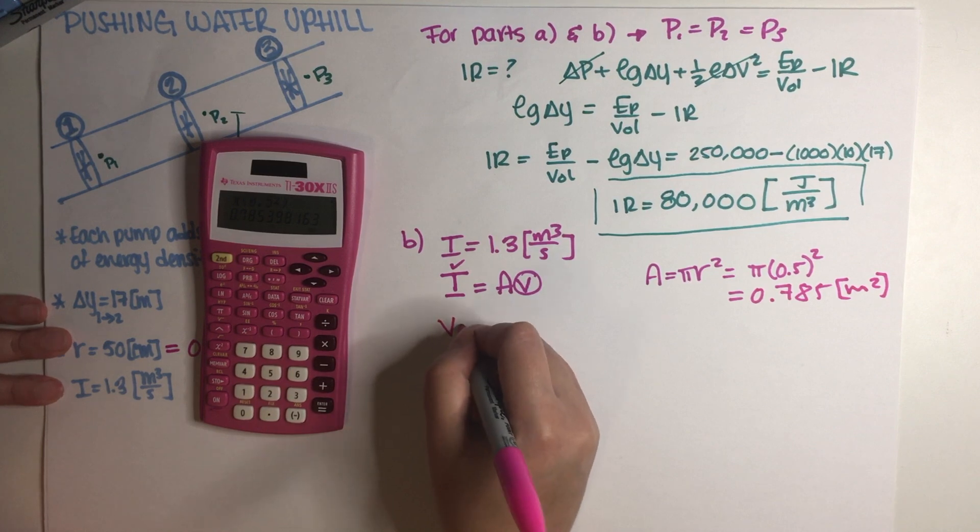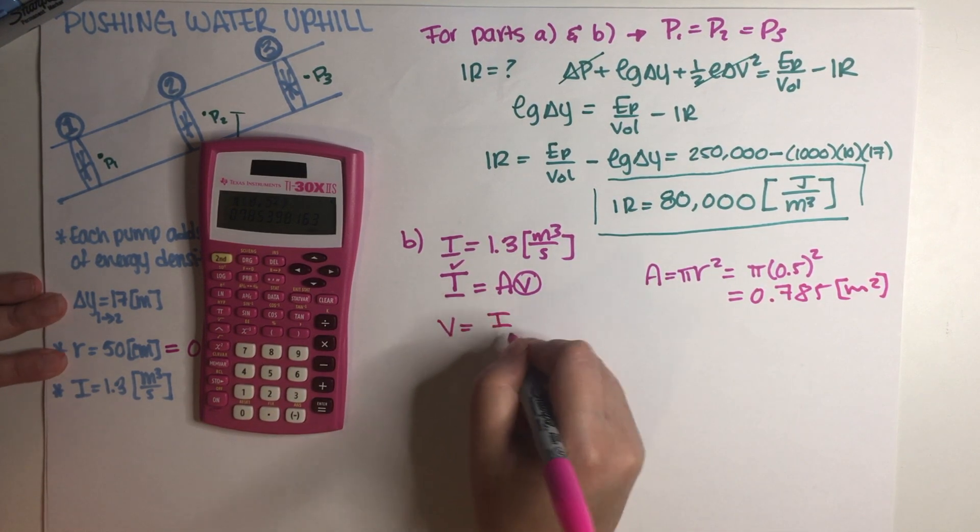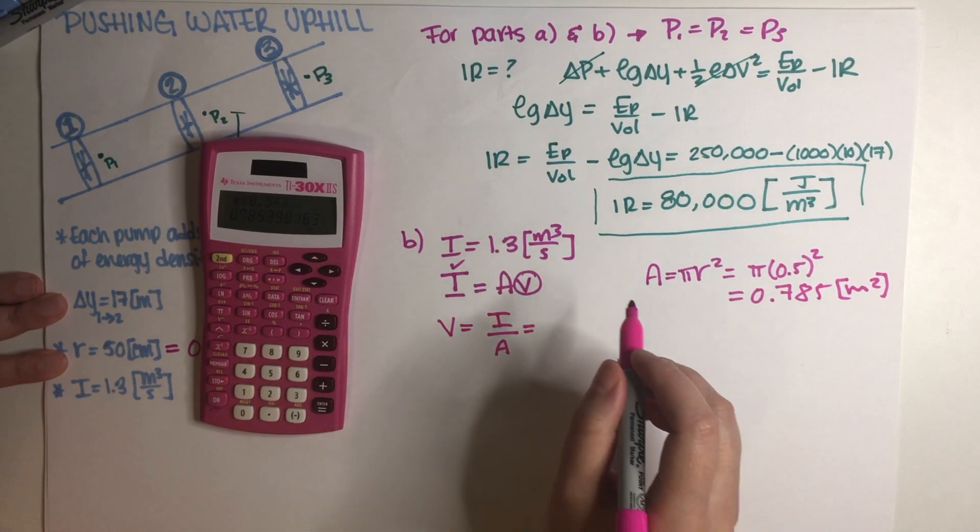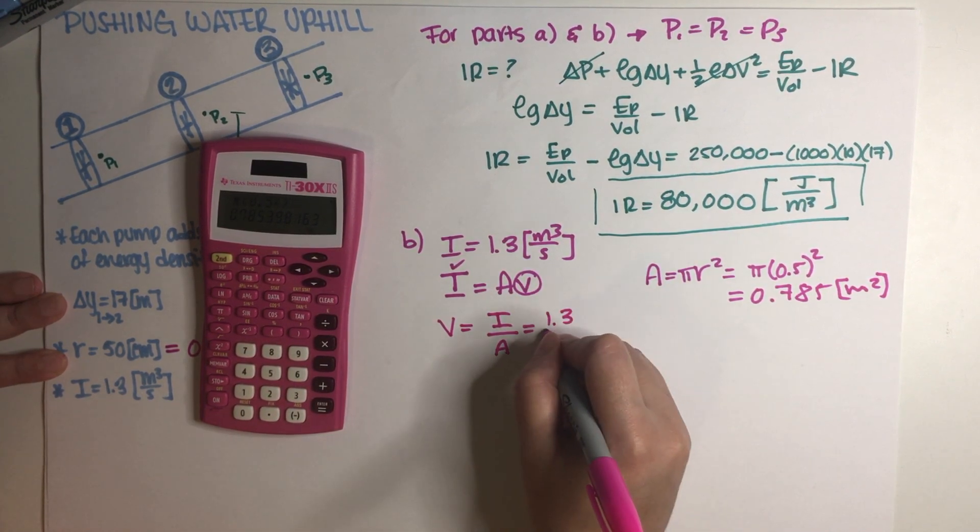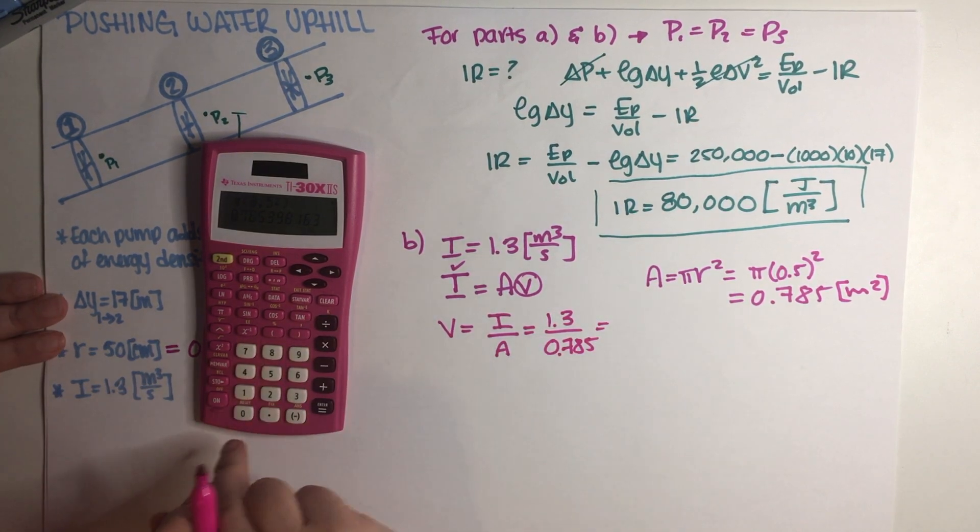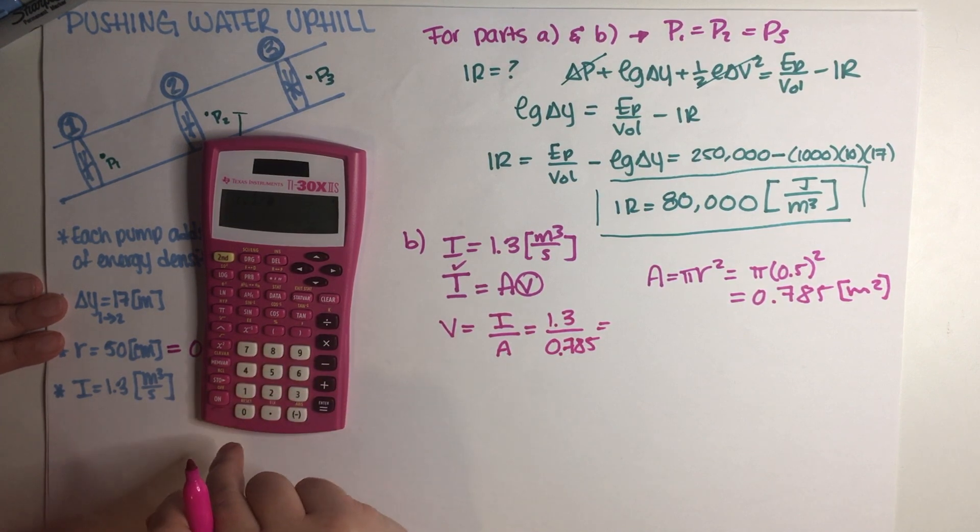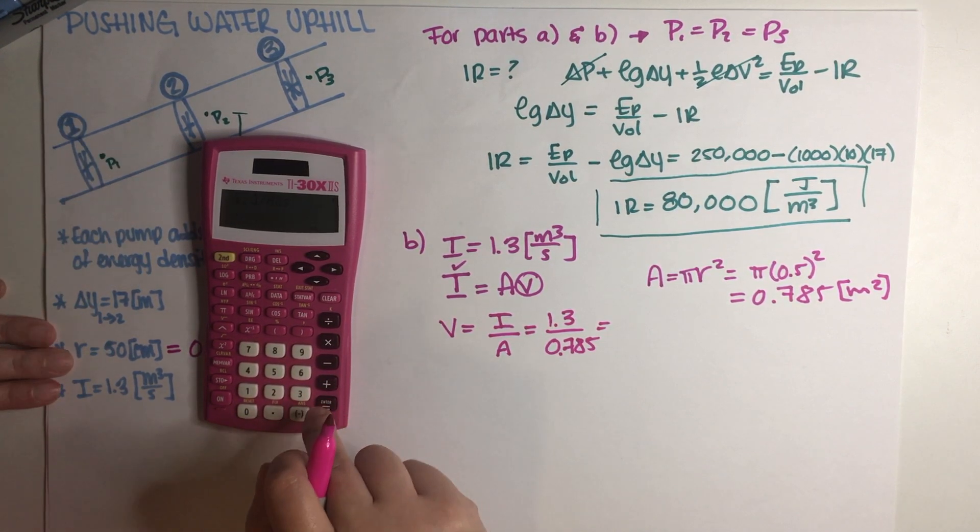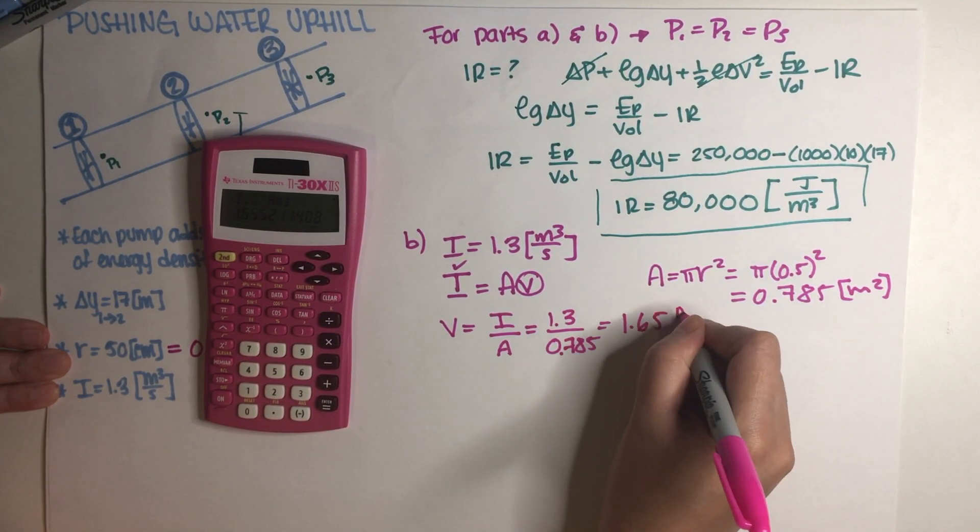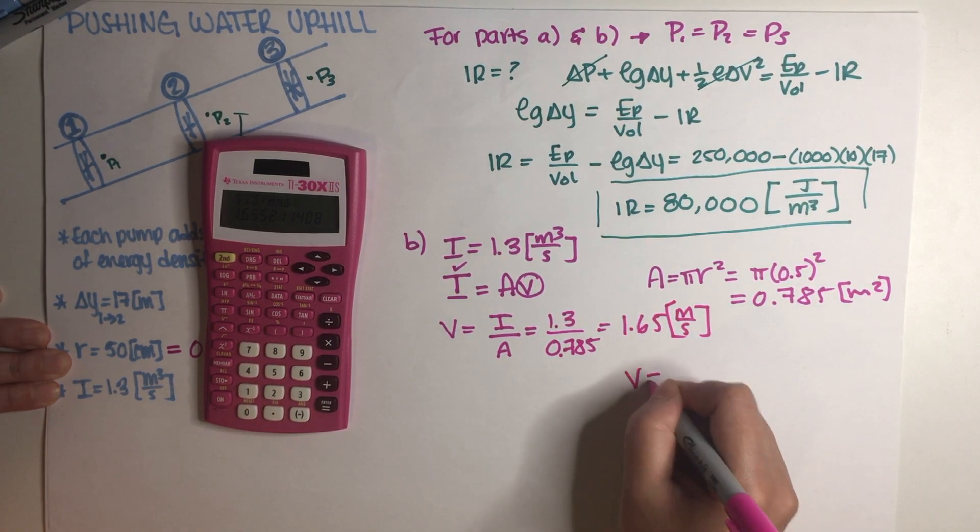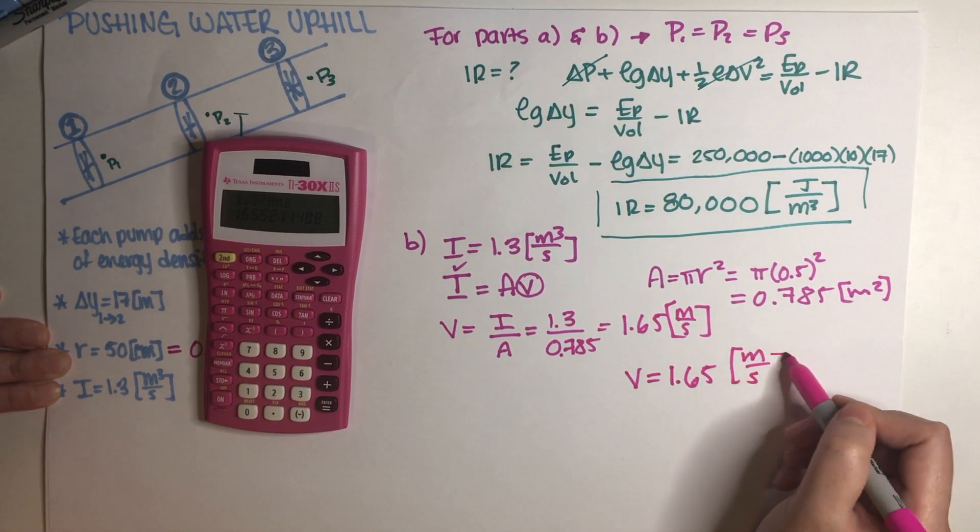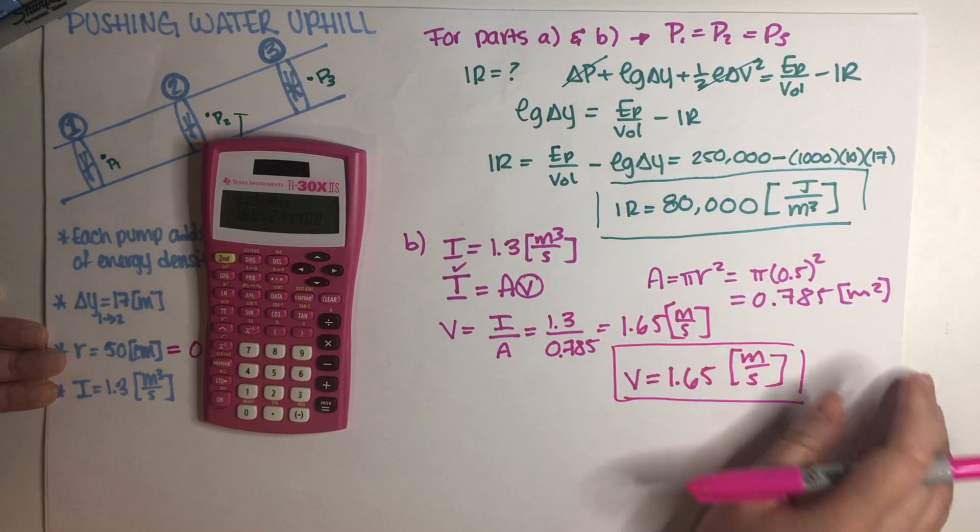So now going back to velocity, velocity is just flow rate divided by area. So I just have to divide 1.3 through 0.785. So let's just go ahead and do that. So 1.3 divided by answer, 1.65 meters per second. So final answer is 1.65 meters per second. There we go.